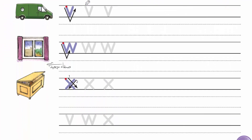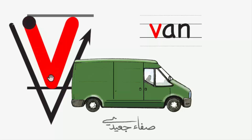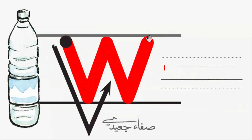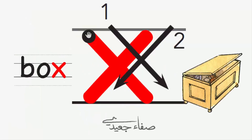V. Van. W. A window. X. A box. The name is V. The sound is V. The name is W. The sound is W. The name is X. The sound is X.